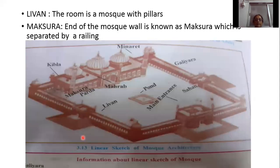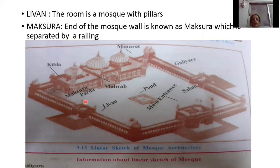Then Liwan — the room in a mosque with pillars is called Liwan. Then Maqsura — it is the end of the mosque wall which is separated by a railing. The room in a mosque with pillars is Liwan, and the end of the mosque wall separated by a railing is called Maqsura.